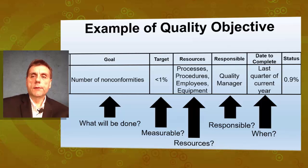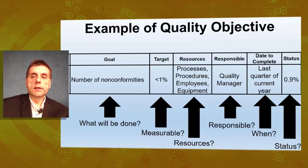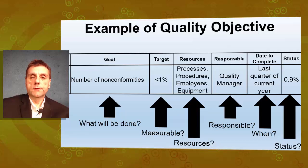When will the objective be completed? The last quarter of the current year, for example. And looking at the current status, at this moment it is at 0.9%, which is below the target, meaning the organization is still complying with the specified values.